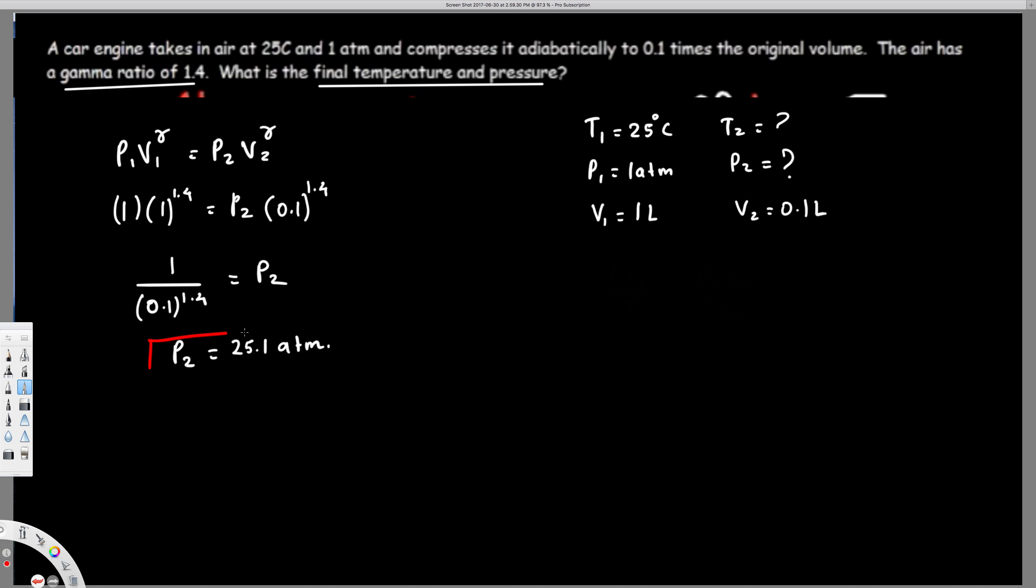Right, now we have to find the final temperature. To find the final temperature, what equation can we use? Another equation we can use is T1V1 = T2V2, with power gamma minus one. T1V1^(gamma-1) = T2V2^(gamma-1), right?